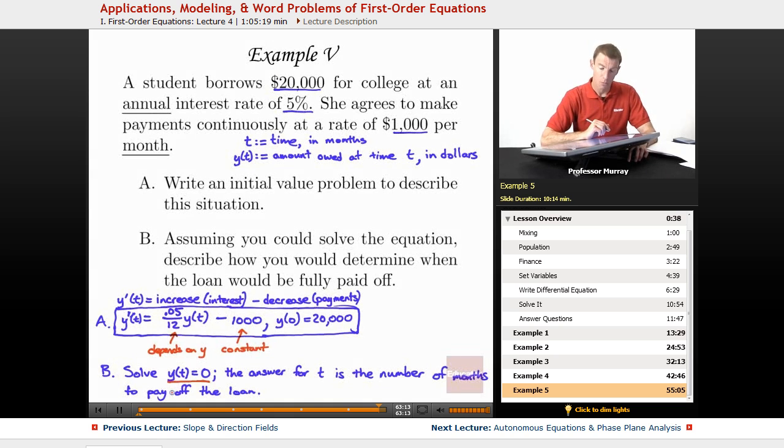So just to recap here, we wrote our initial value problem. We set up our variables. t is always time. y(t) is the quantity we're keeping track of, which is the amount she owes at time t. Got to be careful about your scale here, because part of the problem was given in months, and part of the problem was given in years. So we said, okay, we're going to make our time scale be months. And then y prime of t is the increase minus the decrease.